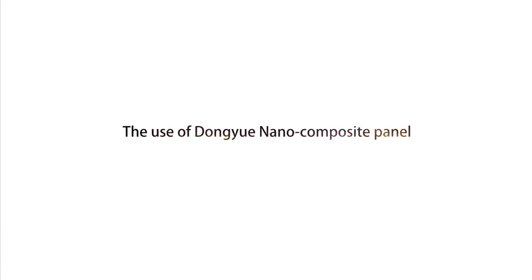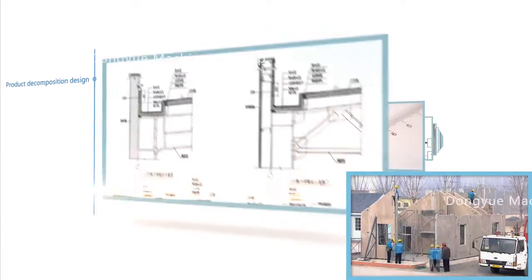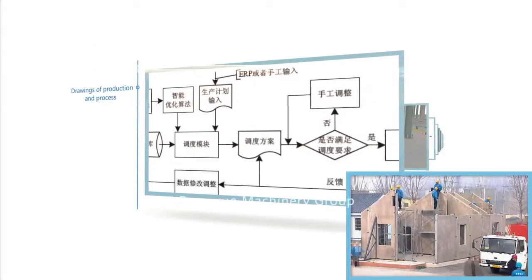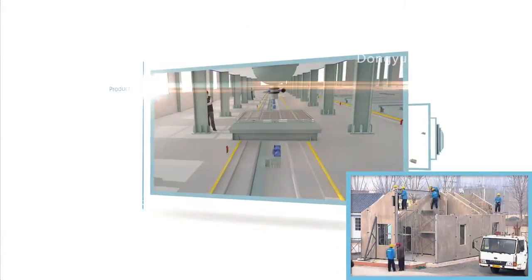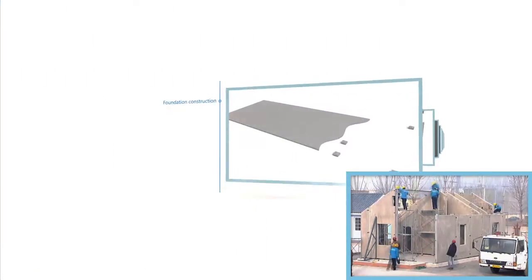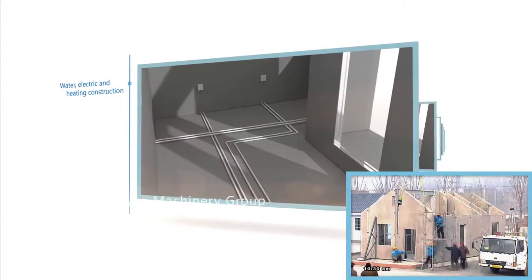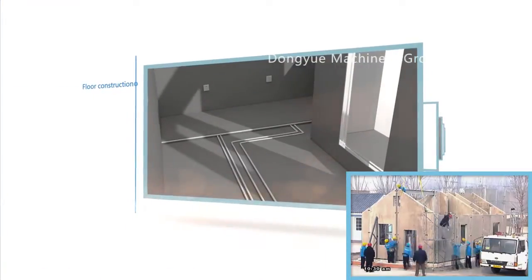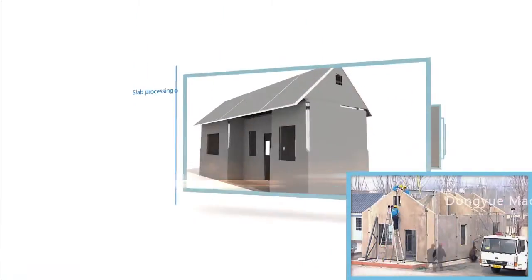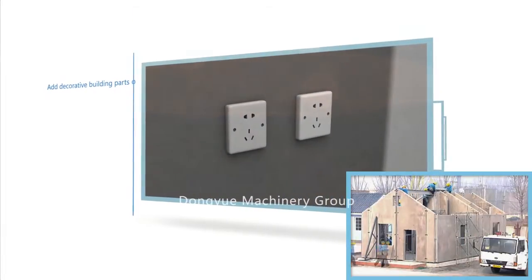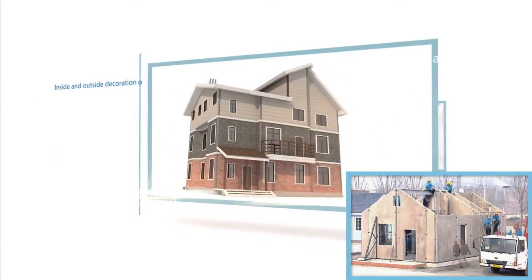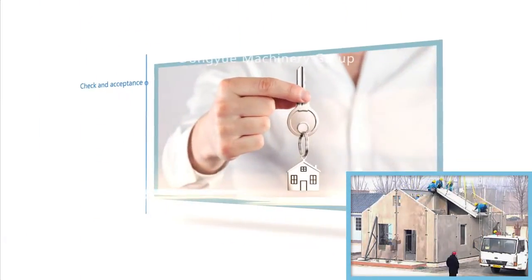Dongyue service process: issued building drawings, product decomposition design, structural calculations, drawings of production and process, production, foundation construction, assembled nanocomposite panel, water and electric and heating construction, floor construction, slab processing, adding decorative building parts, inside and outside decoration, and final check and acceptance.